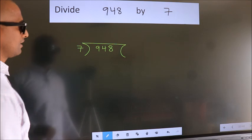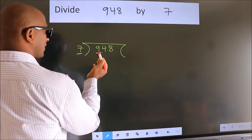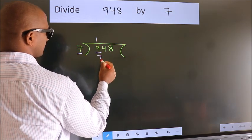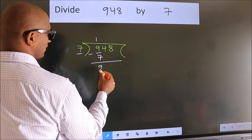Next, here we have 9, here 7. A number close to 9 in 7 table is 7 once 7. Now, we should subtract. We get 2.